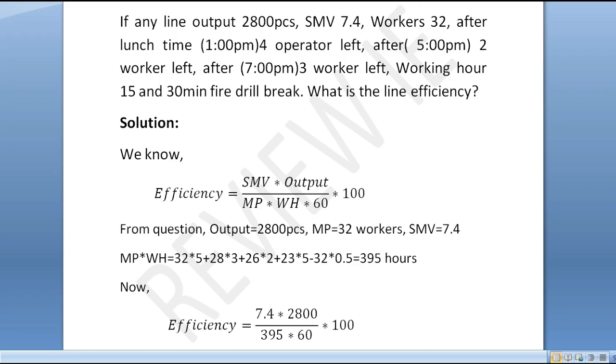Total manpower is 32. After 5:00 PM, 2 workers left. After 7:00 PM, 3 workers left. The total manpower calculation accounts for when each person left - one person for a full day, another for partial hours.